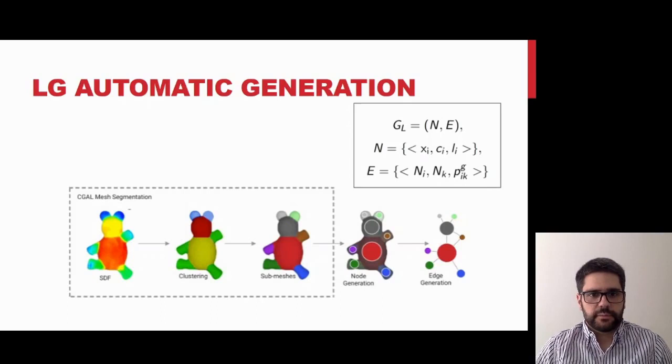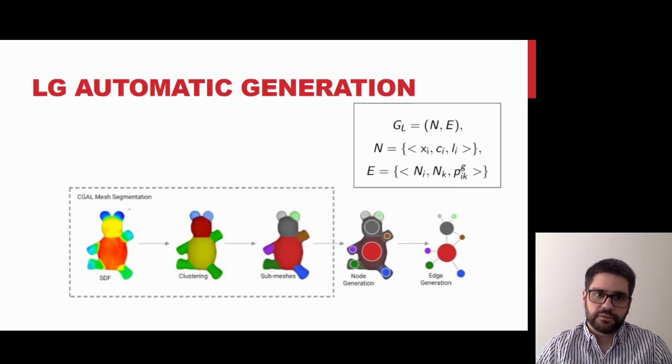After the segmentation, our method computes from each submesh the sphere centered at the submesh center that minimizes the quadratic error between the sphere surface and the submesh vertices. Finally, we connect two nodes with an edge if the respective submeshes are adjacent in the original model.